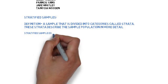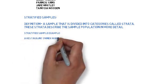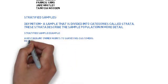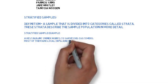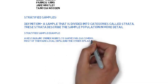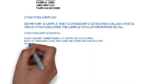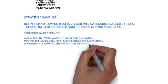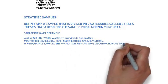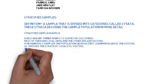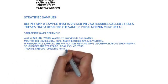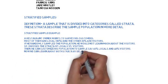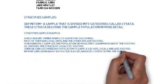Stratified Example: A restaurant owner wants to survey his customers. Most of them are local, about 80%, and the others are visitors. If he randomly sampled, he would not learn much about the visitors. So he chooses the strata of locals vs. visitors. Now he can customize his population so that he can learn about both, deliberately overstating the minority group.